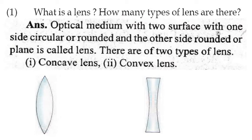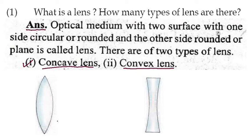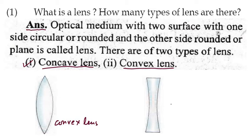The answer is: an optical medium with two surfaces, with one side circular or rounded and the other side rounded or plane, is called a lens. There are two types of lens: first one is the convex lens, and second one is the concave lens. You can see here — this one is the convex lens, and that one is the concave lens.